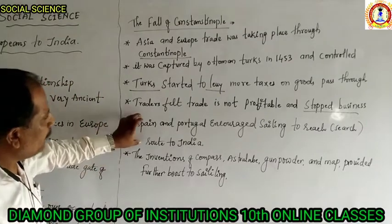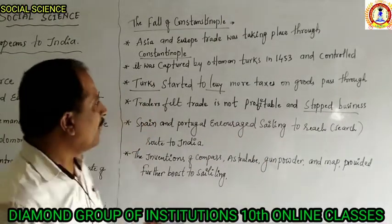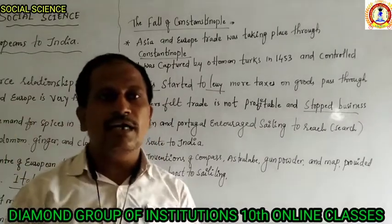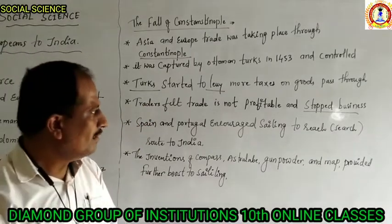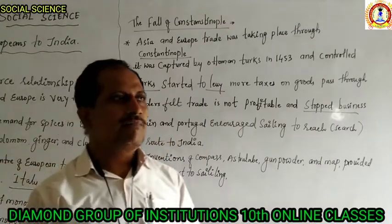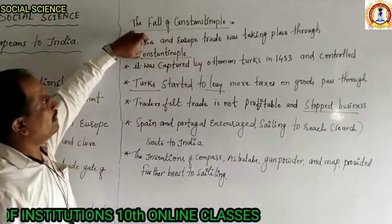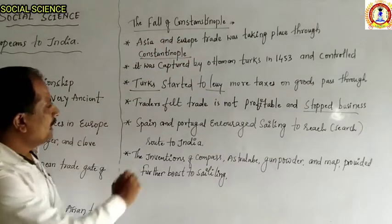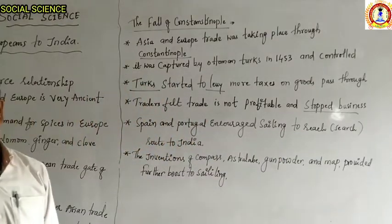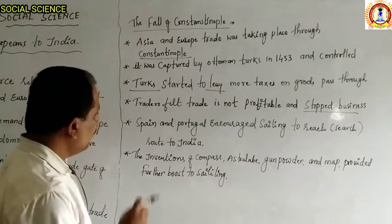The fourth point is that Spain and Portugal encouraged sailing to find a new route to India. After the closure of trade from Constantinople, Spain and Portugal wanted to find a new route towards India. It was a very difficult task to reach India by the land route because Turkey had captured the important place Constantinople. So Spain and Portugal encouraged sailing to search a new route to develop relations with India.